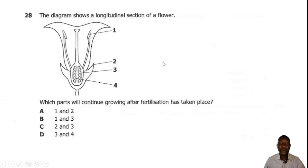Question 28. The diagram shows a longitudinal section of a flower labeled 1, 2, 3, and 4. Which parts will continue growing after fertilization has taken place? After we have fertilization, the flower will lead to production of a fruit. So the parts which grow into the fruit are the ovary and the ovules, which are parts 3 and 4. So the correct answer is D.